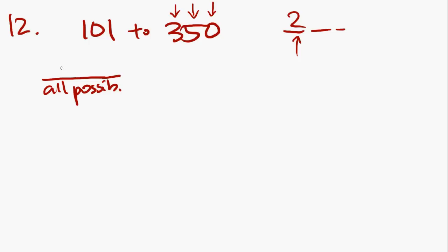Question 12 says raffle tickets numbered consecutively from 101 to 350 are placed in a box. What is the probability that the ticket selected at random will have a number with a hundreds digit of 2? Whenever you are looking for probability, you have to remember that the probability is going to be a fraction. The bottom is all possibilities, and the top is going to be what you're looking for.